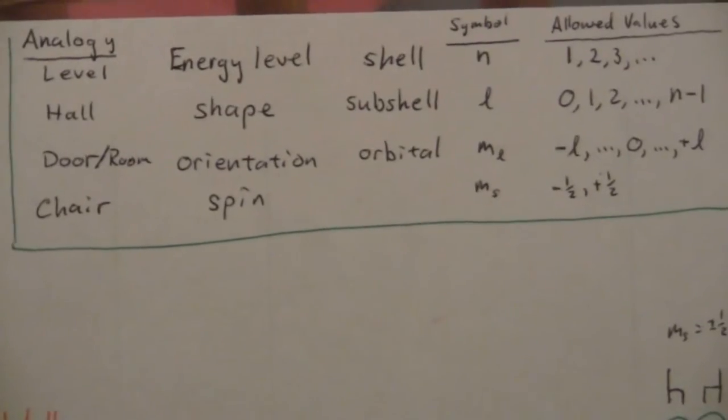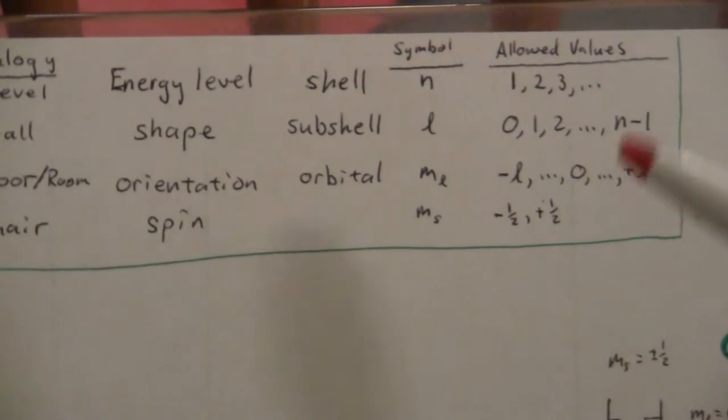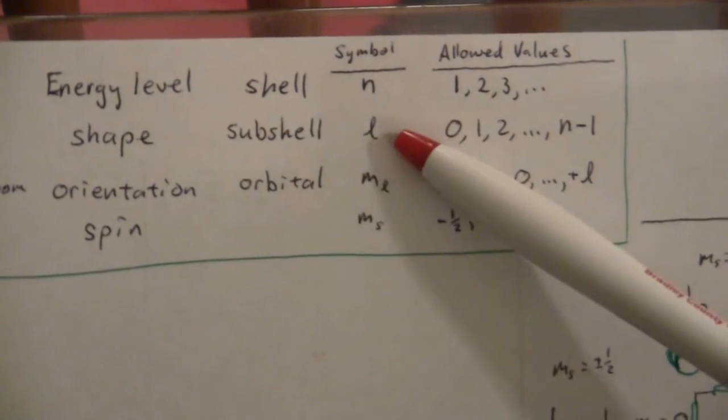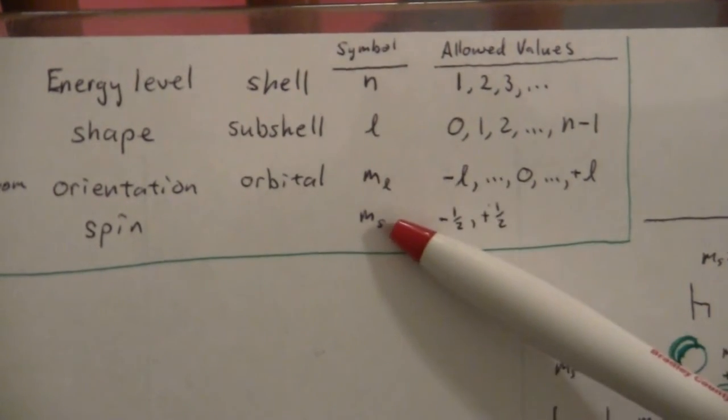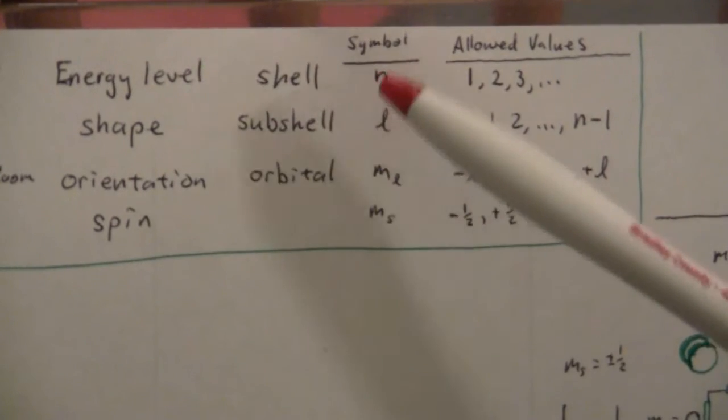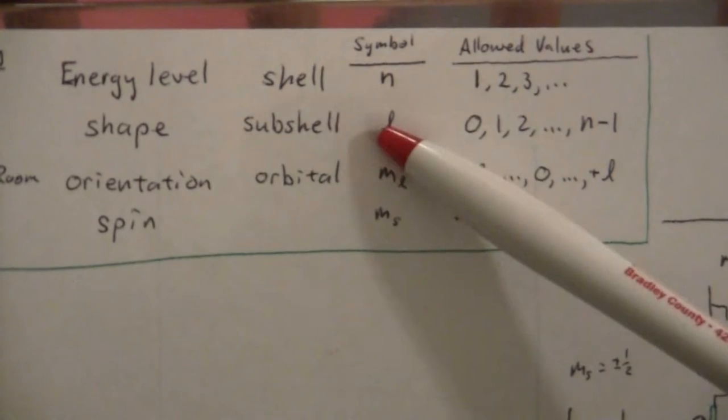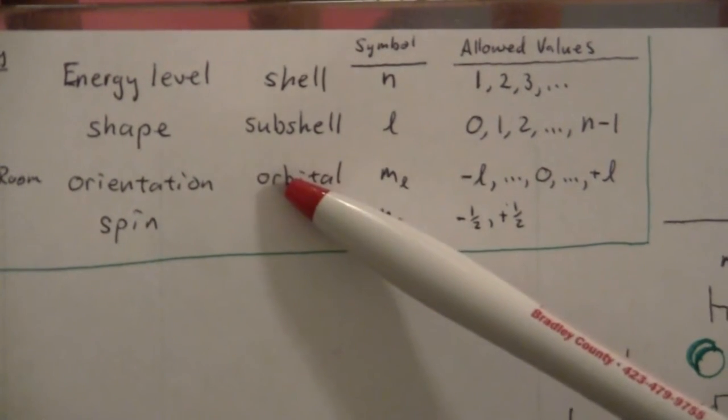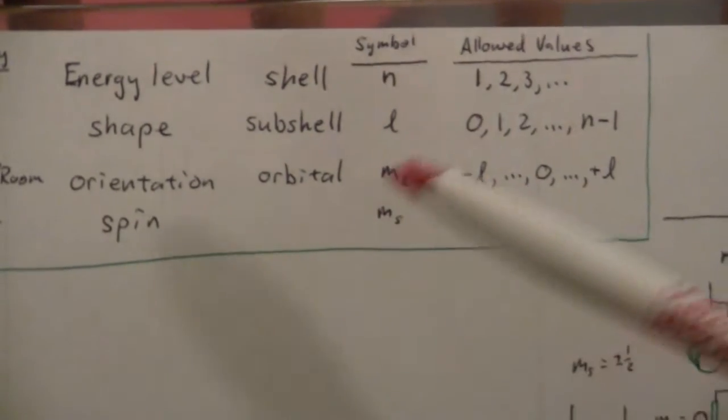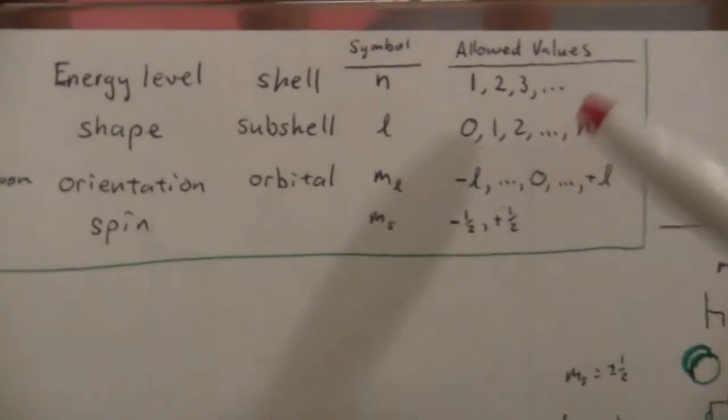Here we have the quantum numbers that we're going to be describing with this analogy. The four quantum numbers are N, L, M sub L, and M sub S. N tells us the shell, L tells us the sub-shell, M sub L is the orbital, and M sub S is the spin. Each electron has a unique value for these four quantum numbers.